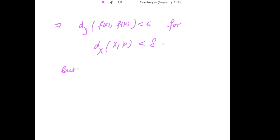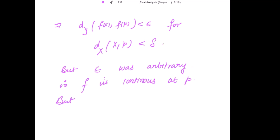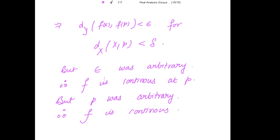Epsilon was arbitrary, therefore f is continuous at p. But p was also arbitrary, so f is continuous on the complete metric space X. The complete proof is done. Thank you.